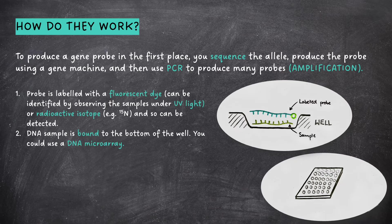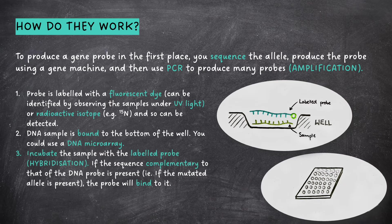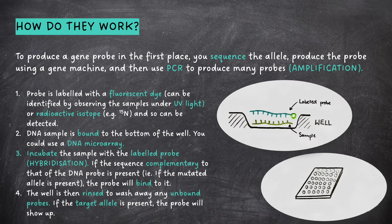Then we incubate the sample with a labeled probe to achieve hybridization. If the sequence complementary to that of the DNA probe is present — i.e. if the mutated allele is present — the probe will bind to it. The well is then rinsed to wash away any unbound probes. If the target allele is present, the probe will show up.